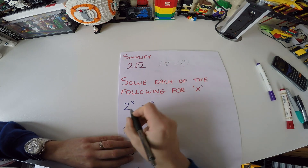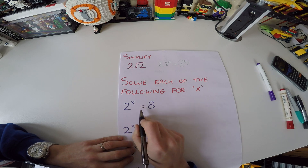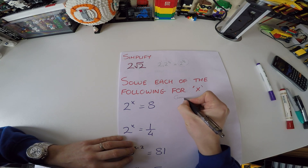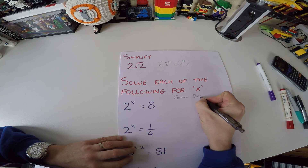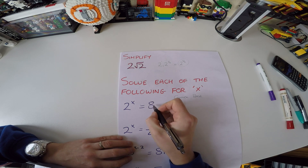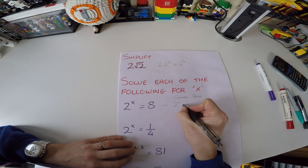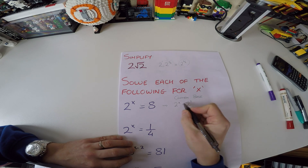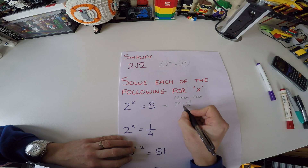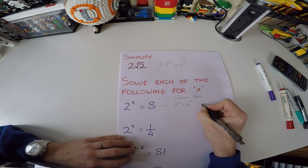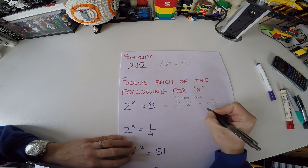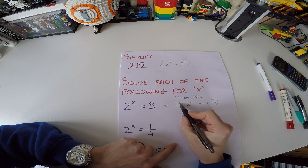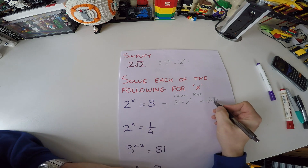The next one: solve for x where 2 to the power of x equals 8. What we're looking for is a common base on both sides. 2 is a pretty low base — can we get 8 as 2 to the power of something? Yes: 2 to the power of x equals 2 to the power of 3. Since both bases are the same, the only way this equation can be true is if x equals 3.